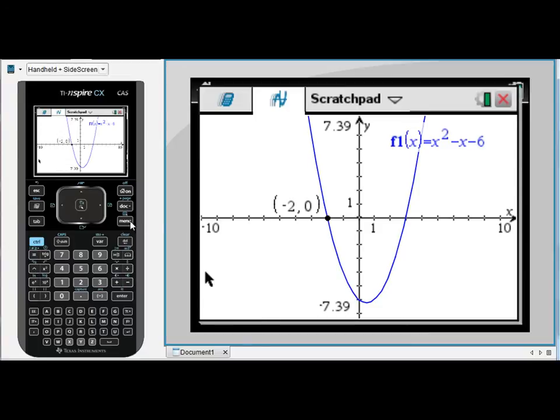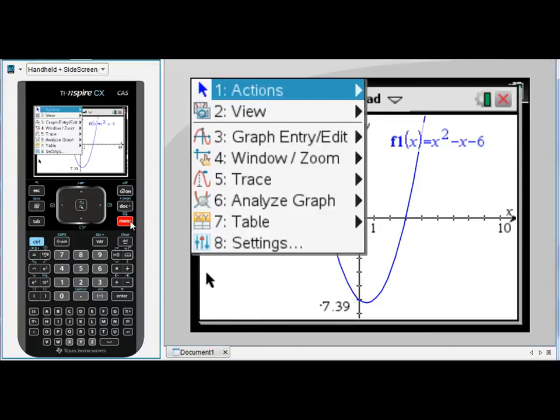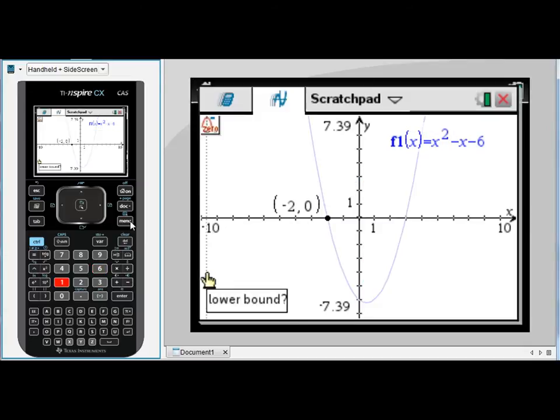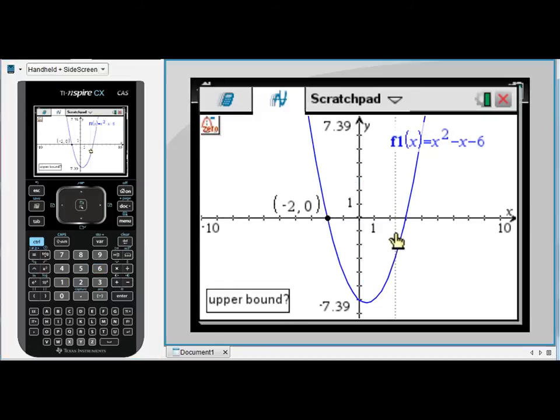We need to repeat that same process for the other x-intercept. So menu 6, 1, asking for a lower bound somewhere to the left, click. Somewhere to the right, click again. And there I have my other zero or x-intercept.